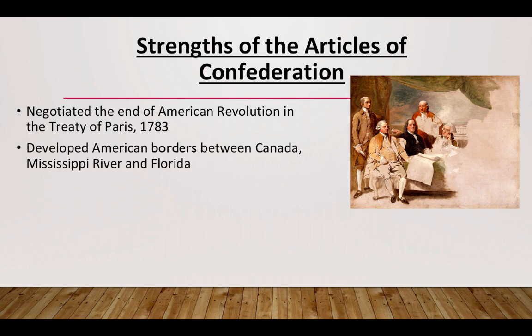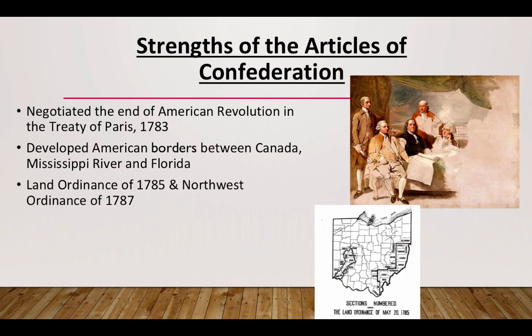Also, it developed the borders between Canada, the Mississippi River, and Florida, really starting to outline what the boundaries of the early United States would be. One of the most significant positives of the Articles is how it sets up a program to bring in new states into the Union: the Land Ordinance of 1785, as well as the Northwest Ordinance of 1787.